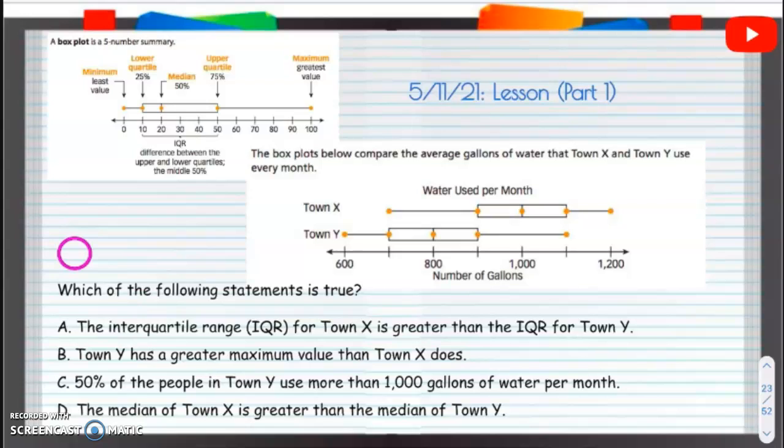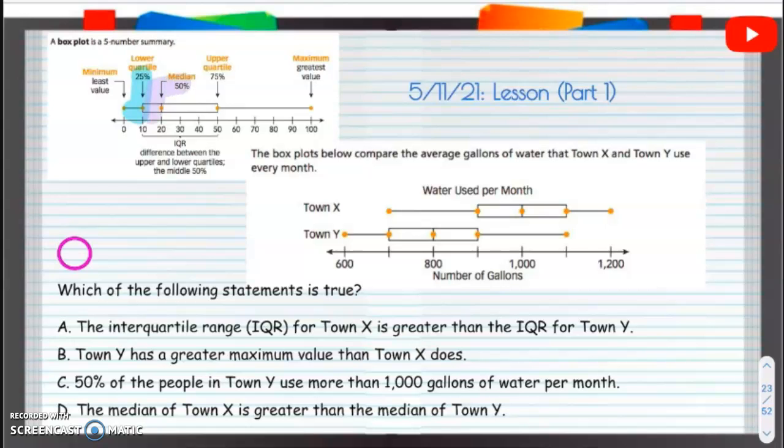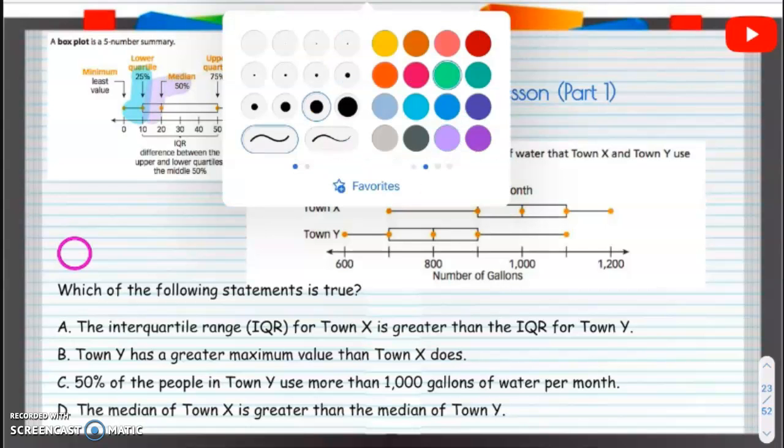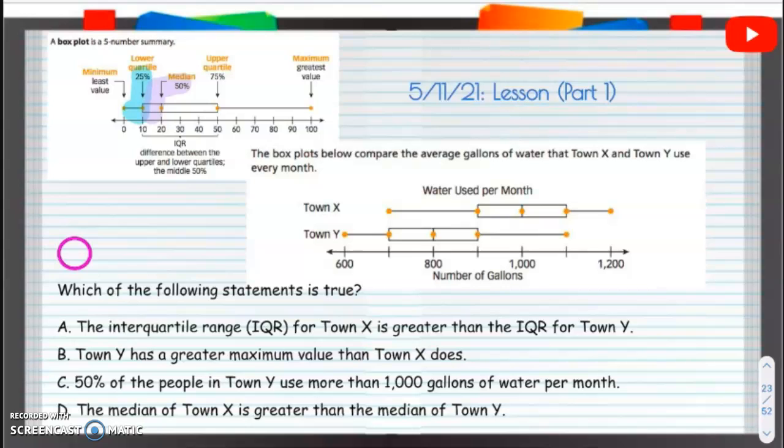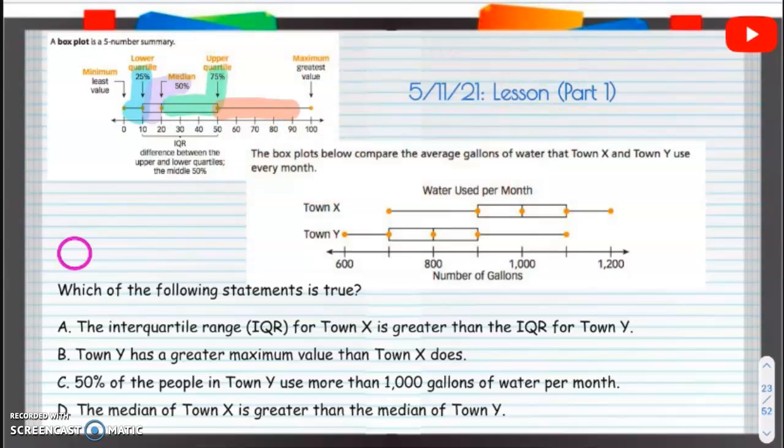Now, something that might be a little bit new is percents because this is going to be the 25% because it's one-fourth of it. The next one is going to be that 50% because it's two-fourths of it. Third part is going to be 75% because it's three-fourths. And the last one is going to be 100% because it'll be four out of the four.